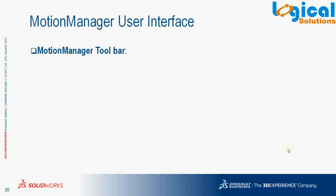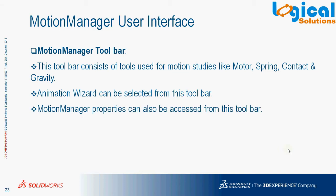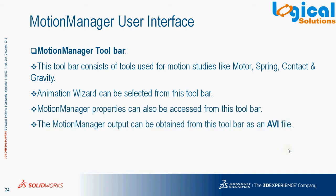Next, Motion Manager Toolbar. This toolbar consists of tools used for motion studies like Motor, Spring, Contact, and Gravity. Animation Wizard, used for converting exploded views and physics-based simulations to keyframe animation, can also be selected from this toolbar. Motion Manager properties can also be accessed, and the Motion Manager can also output to AVI or a series of images from this toolbar.